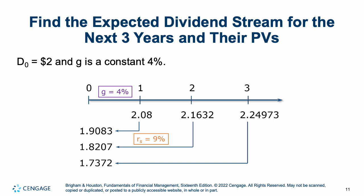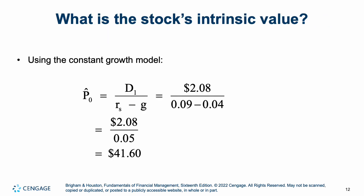To find dividends for the next three years and intrinsic value: D0 is $2, growth is a constant 4%. D1 would be $2.08 — that's 2 times 1.04 to the first — then $2.1632 to the second, and $2.24973 to the third. Using those dividends and their present values, we apply the formula: price zero equals D1 over (r minus g) = $2.08 divided by (9% minus 4%), giving an intrinsic value of $41.60. Using this method, this stock should be trading at $41.60.